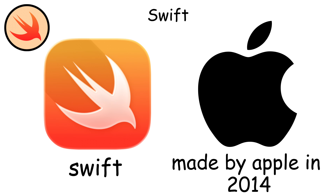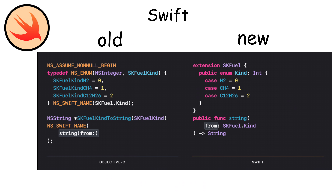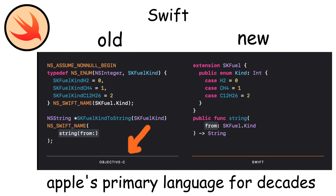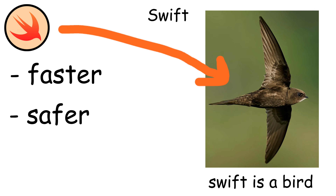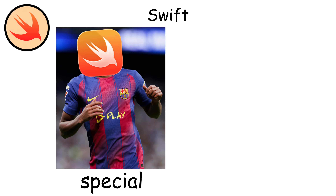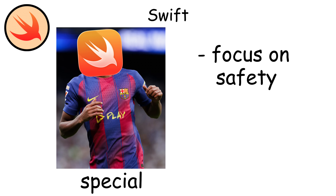Swift was created by Apple in 2014 as a replacement for Objective-C, which was Apple's primary programming language for decades. Swift was designed to be faster, safer, and more modern. What makes Swift special is its focus on safety and performance.